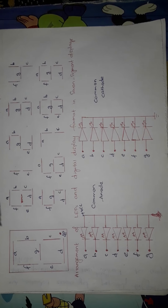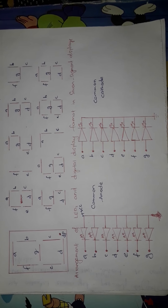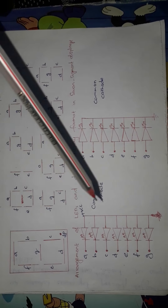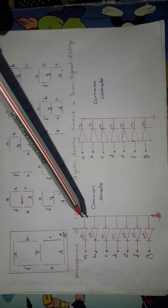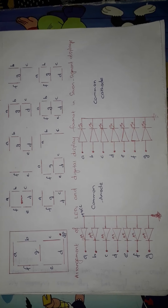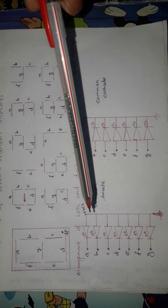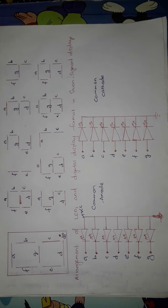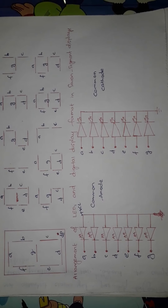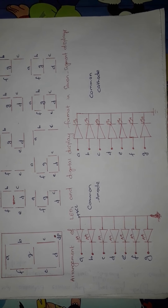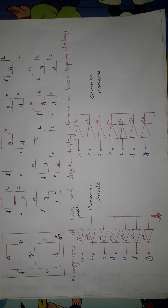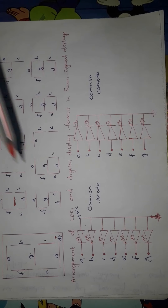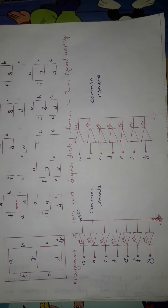For eight segments including DP, you require eight LEDs. The segment connections are shown with seven LEDs for seven segments. These LEDs can be connected in a common anode configuration or a common cathode configuration. Each LED has two terminals: one anode terminal and one cathode terminal.